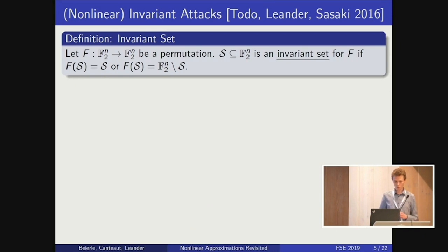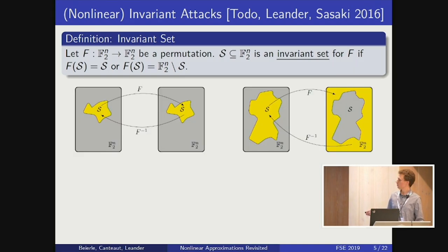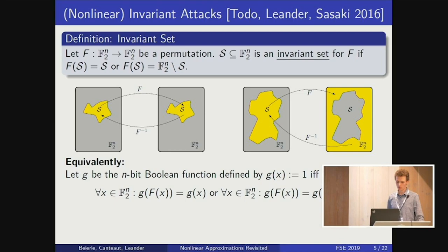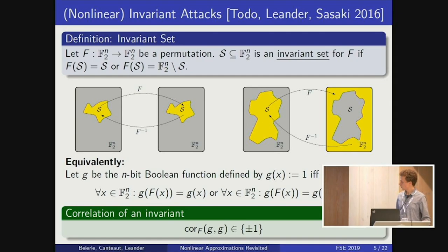Now I will briefly go to nonlinear invariant attacks. In invariant attacks, we look at an invariant set that stays invariant for the application of a permutation f — either s is mapped to itself or to its complement. This can be expressed by a Boolean function on n-bit, defined as the indicator function on this set. In the notion of approximations, the correlation over f with input function g and output function g is either plus one or minus one, depending on which case we are in.